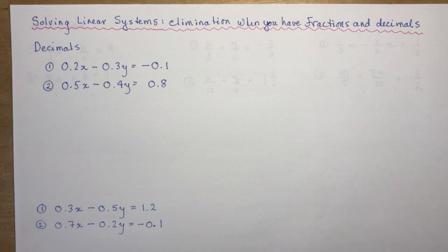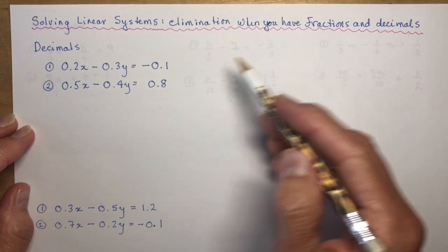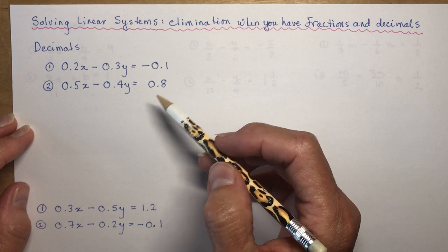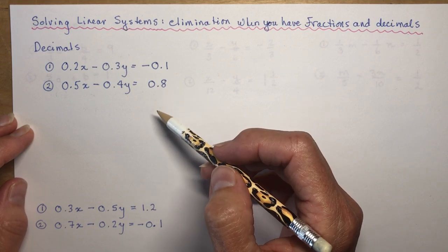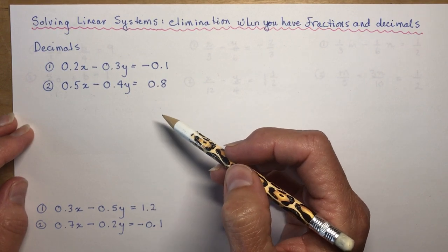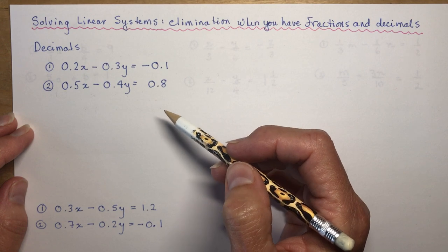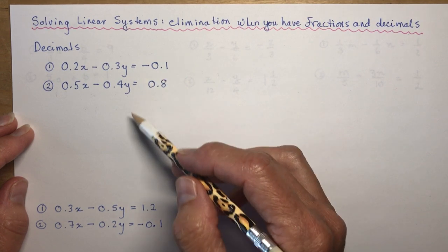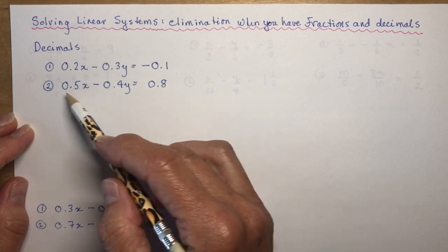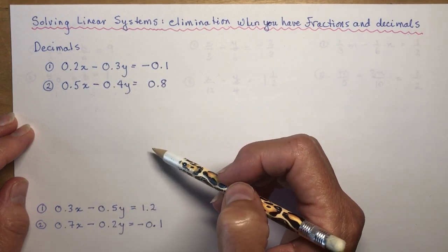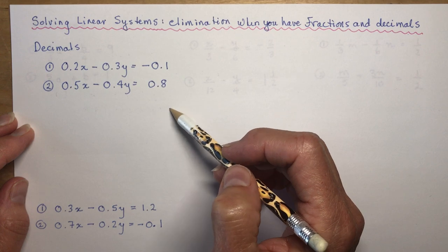Once you see how to do them you're going to laugh — it's easy. Decimals sometimes appear when you have a word problem with money, or fractions when you're doing mixtures of substances or something like that.